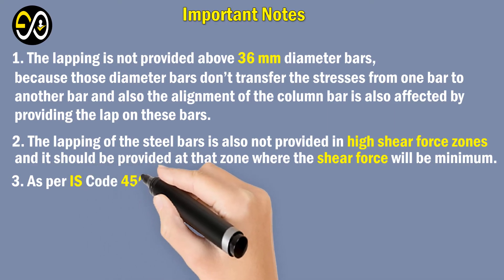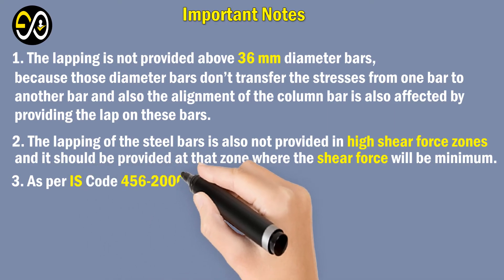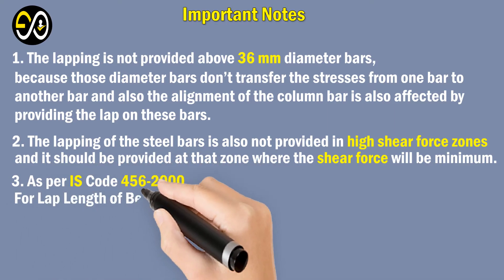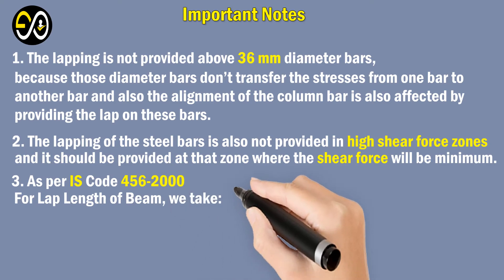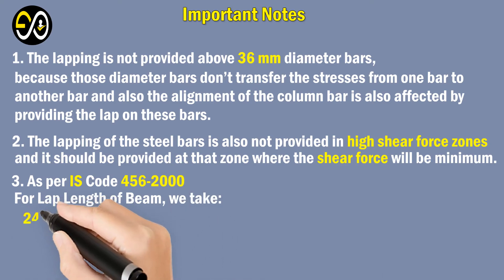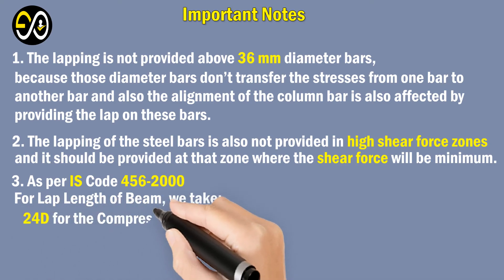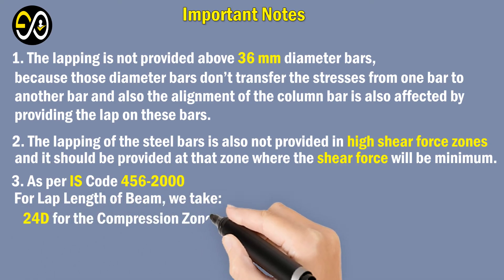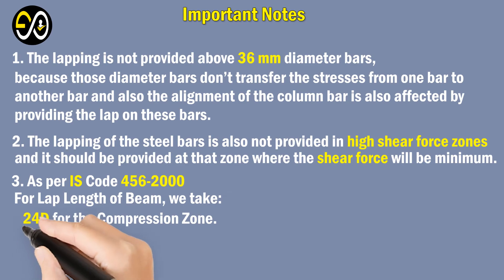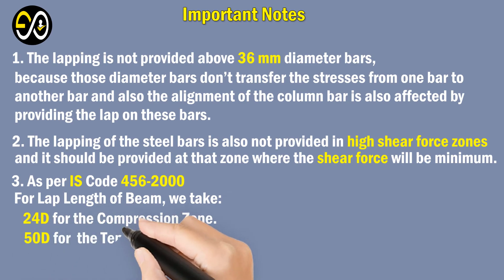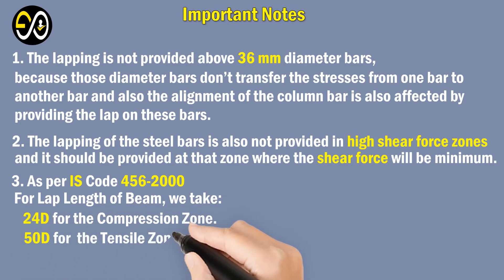Three, as per IS code 456-2000, for the lap length of a beam, we take 24 times the diameter of the bar for the compression zone, and 50 times the diameter of the bar for the tensile zone.